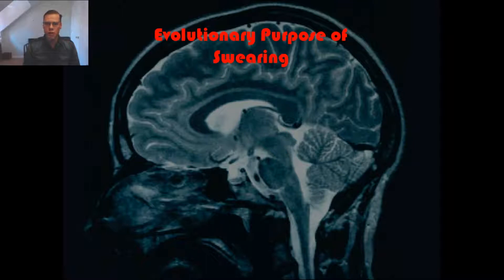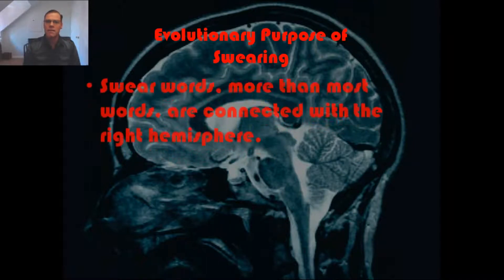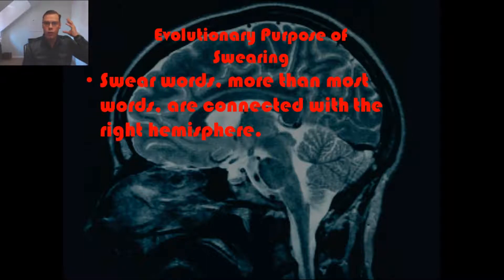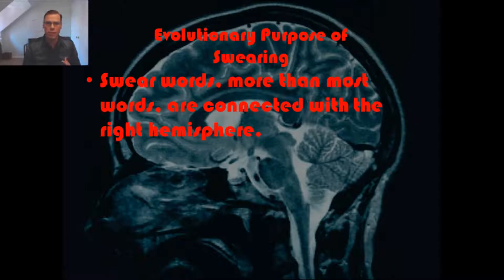We'll start with the evolutionary purpose of swearing. The first thing we need to understand is that swear words, more than most words, are connected with the right hemisphere. In a previous video we looked at the left hemisphere and language in general. The language center for humans is on the left hemisphere, and when it gets damaged, people lose the ability to speak — except for swearing.